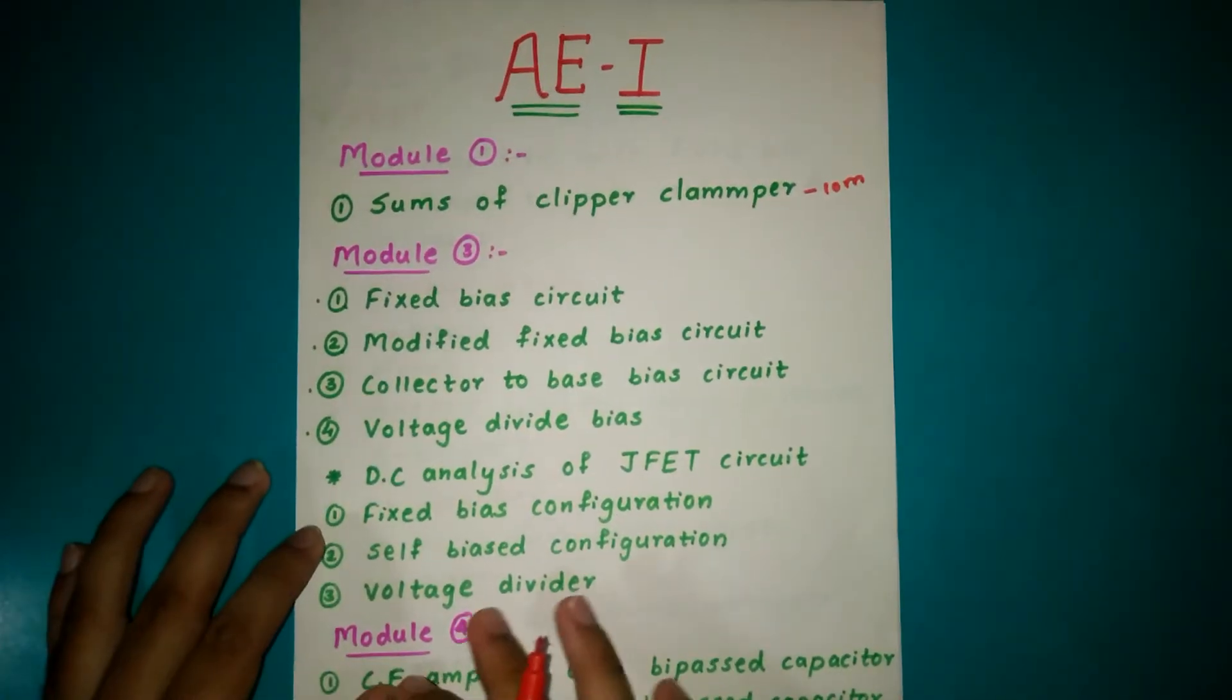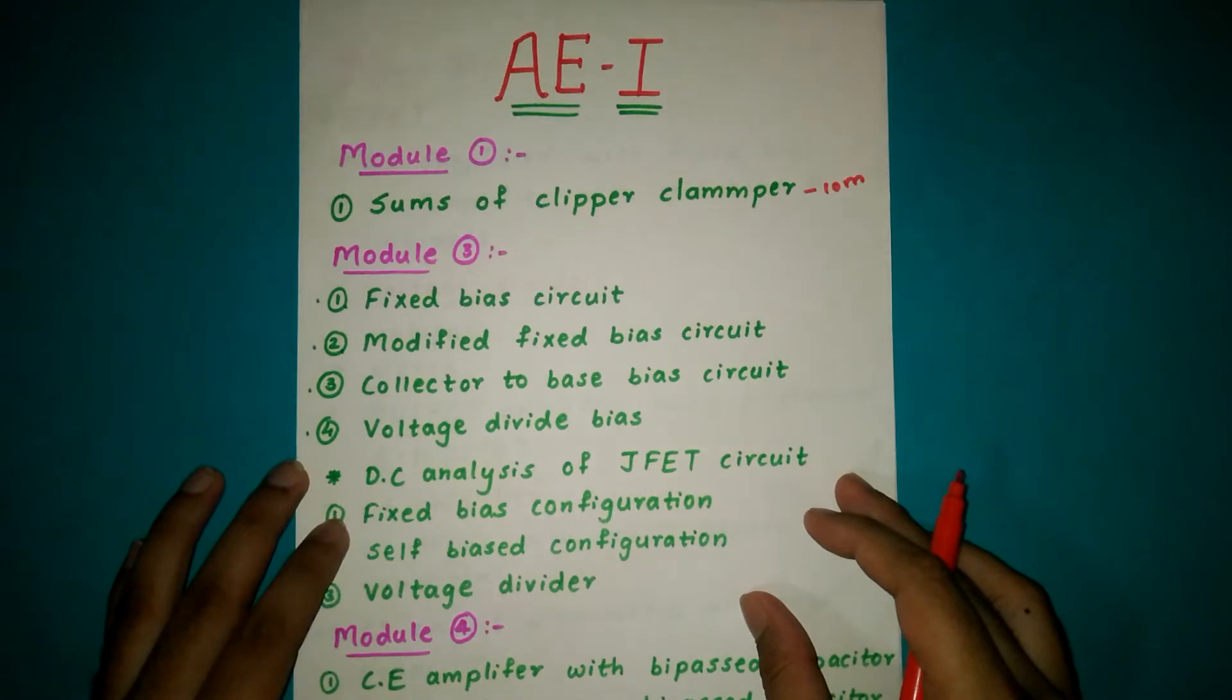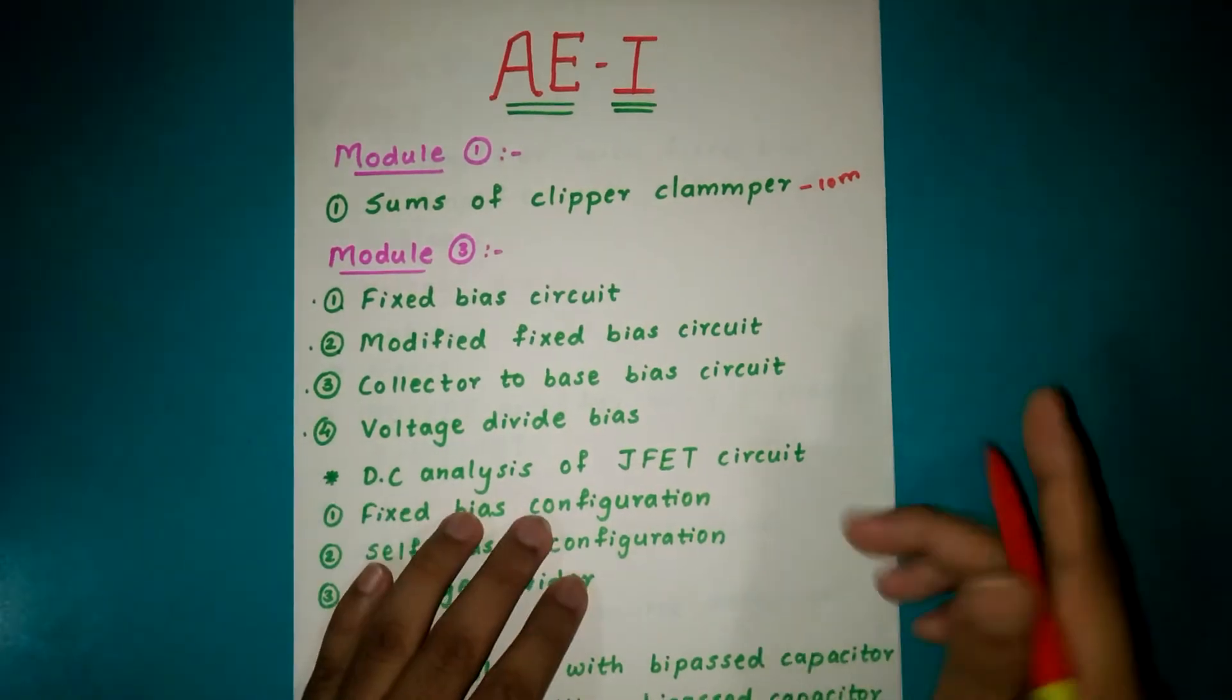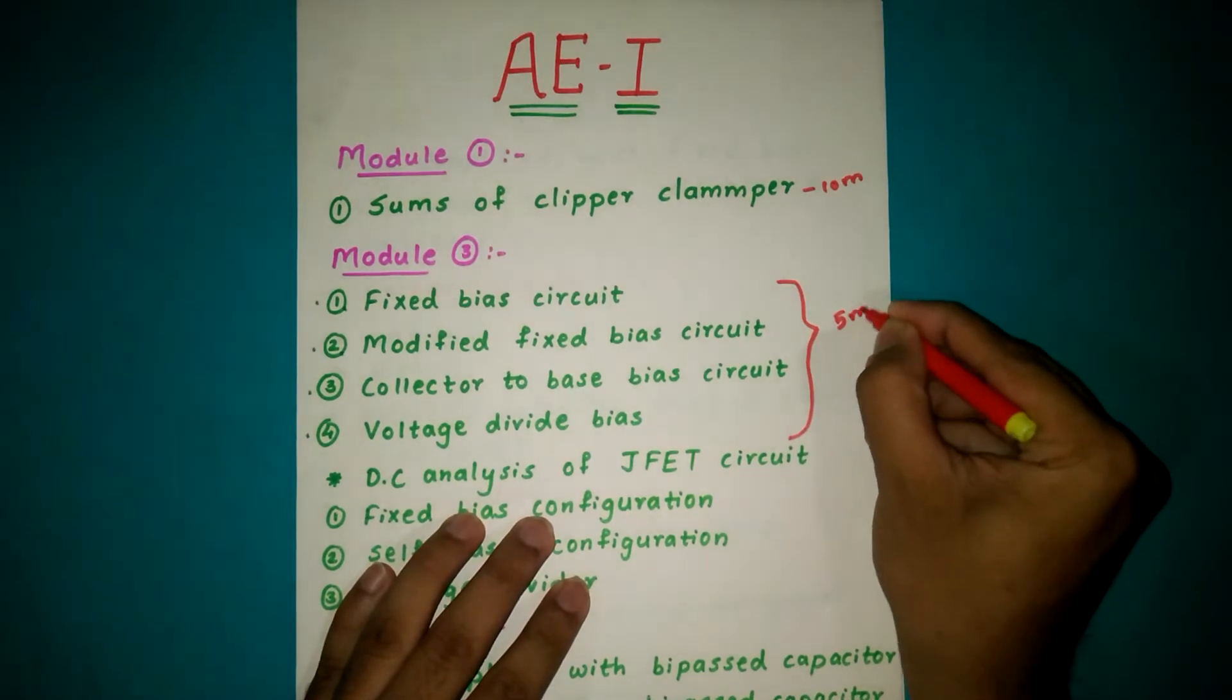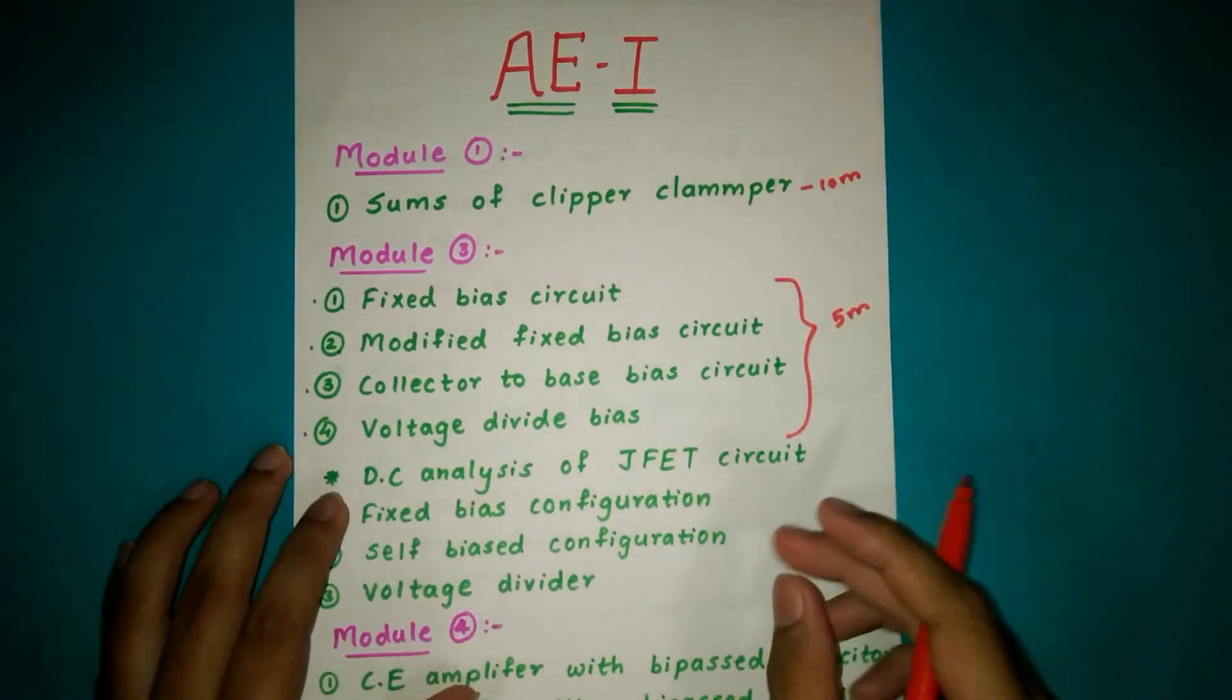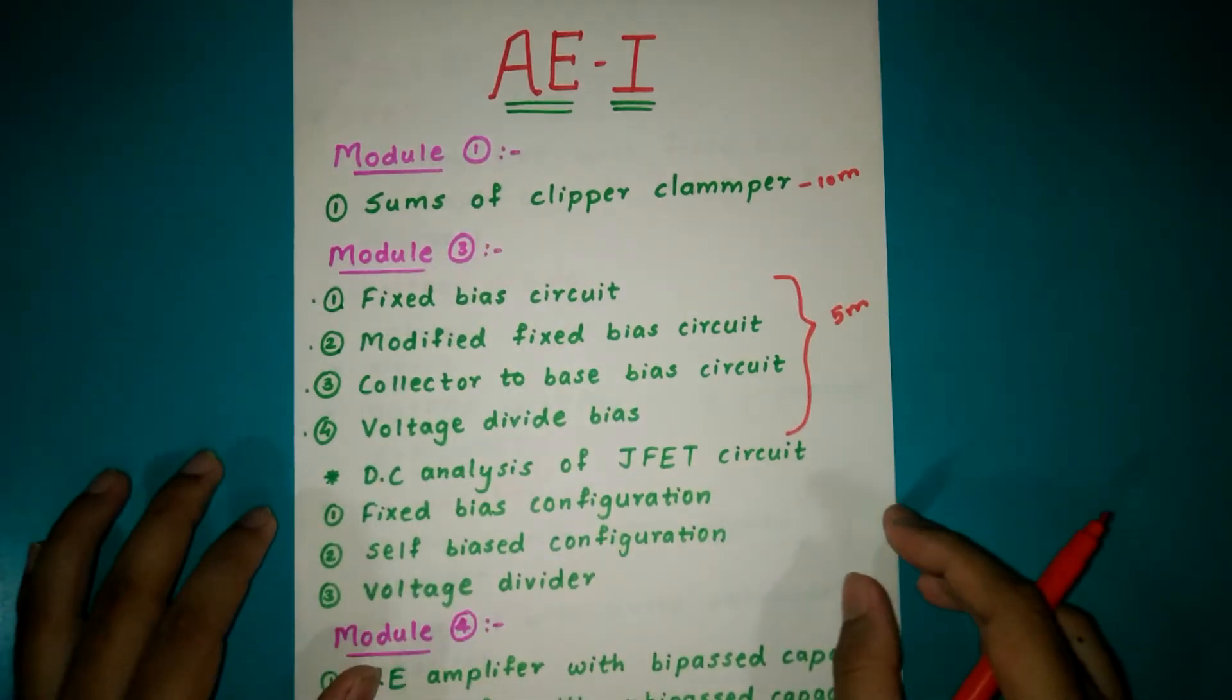From Module 3, you will get fixed bias circuit, modified fixed bias circuit, collector to base bias circuit, voltage divider bias. From this you will get one question for 5 marks, because in question number one you will get 5 marks and the sums of clipper and clamper may also appear in question number one.